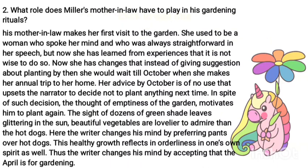What role does Miller's mother-in-law have to play in his gardening ritual? His mother-in-law makes her first visit to the garden. She used to be a woman who spoke her mind and was always straightforward in her speech. But now she has learned from experience that it is not wise to do so. She has changed that instinct of giving suggestions about planting. She would wait until October when she makes her annual trip to her home. Her advice by October is of no use, which upsets the narrator and makes him decide not to plant anything next time. In spite of such decisions, the thought of the emptiness of the garden motivates him to plan again.